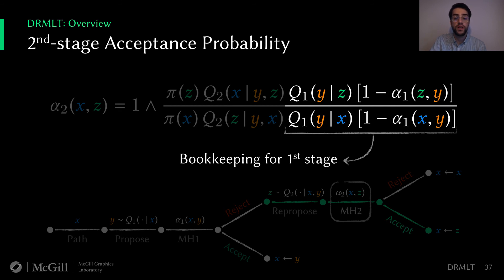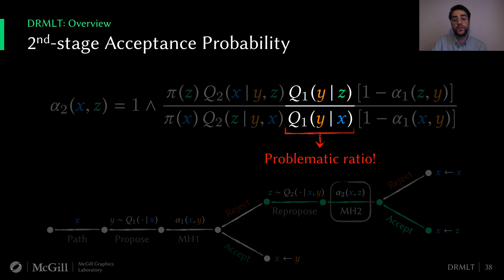What's really happening here is that we are greedily imposing detailed balance at each stage, such that the overall procedure also admits this property. Now, as with a lot of things in rendering, the devil lies in the details. If we look at this ratio, there's nothing that indicates it should cancel out, because the states are different even if q1 is symmetric. We have to compute it somehow, which can be expensive. And even worse, it can drag the whole acceptance towards 0 if the numerator is not well behaved.